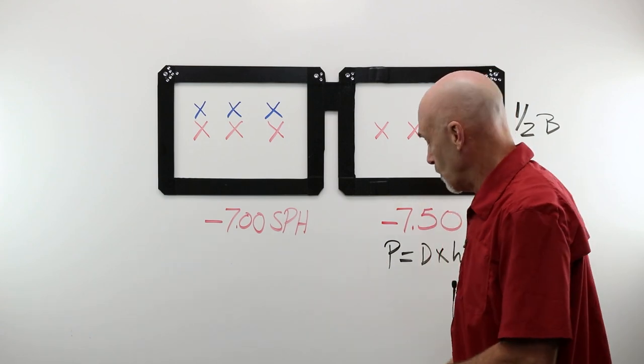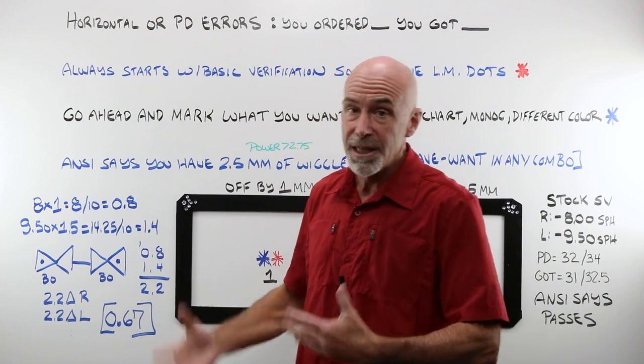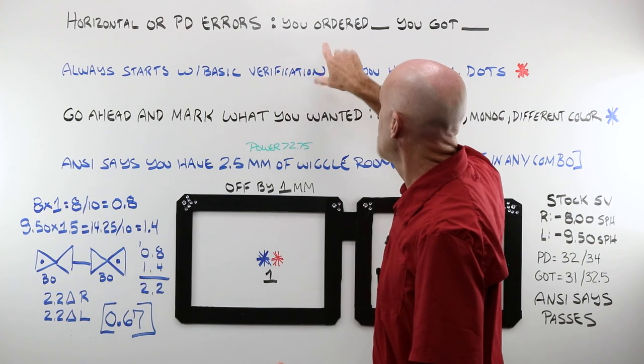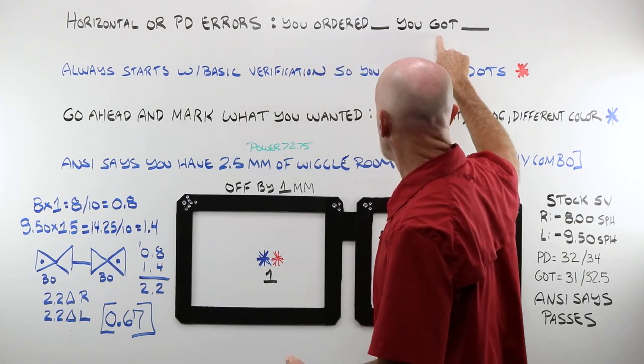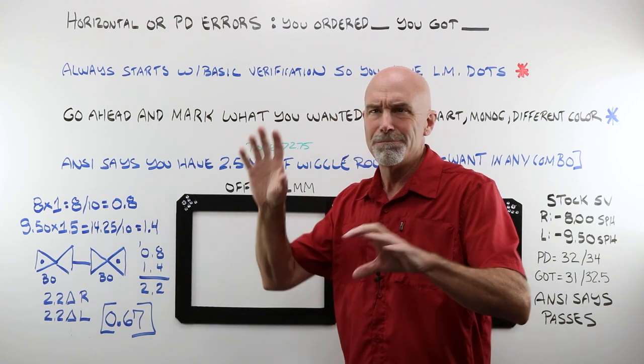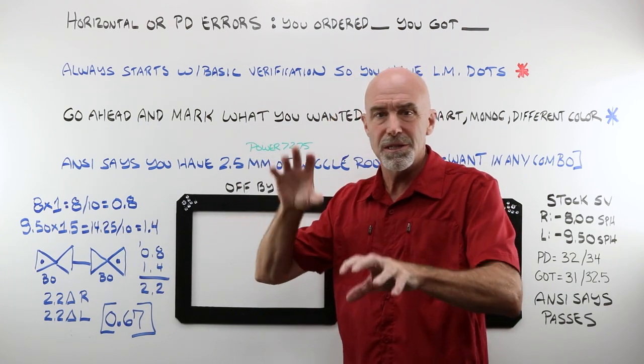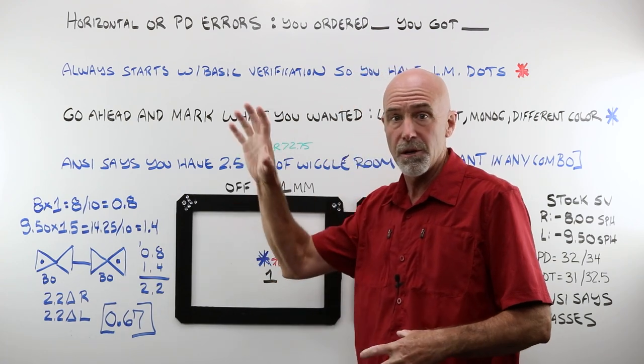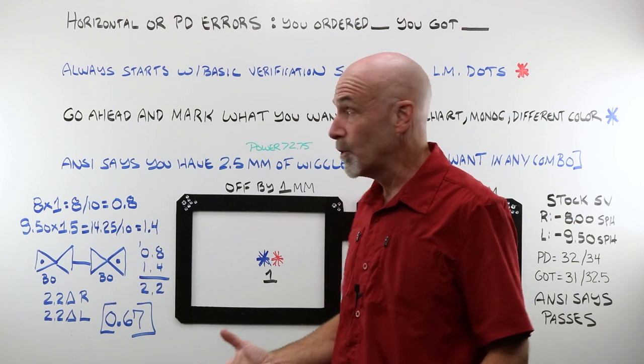For horizontal, unlike vertical, you are comparing two things. You're comparing what you ordered to what you actually received. And you are balancing or working with both lenses, the power in both lenses, the positions in both lenses. Not just an individual one as an anchor point like we did with vertical.